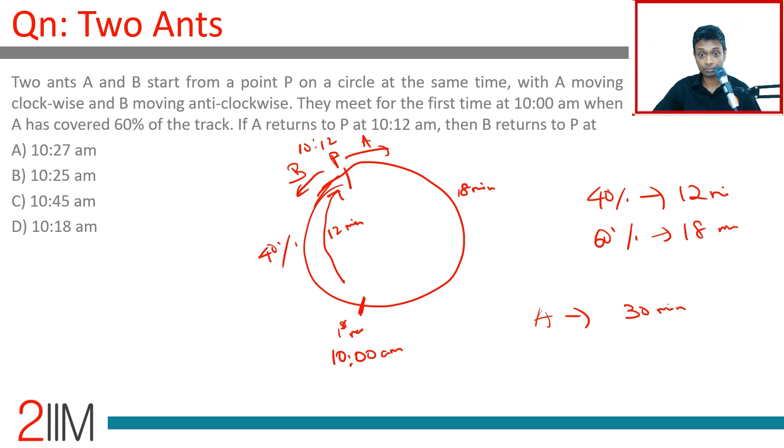They meet at 10:00 here, and then A comes back at 10:12. A takes 30 minutes total. Now let's think about B. When A travels 60%, B has traveled 40%.